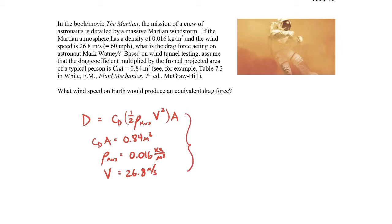If you plug these values into our expression for the drag, what you'll end up getting is that it comes out to be 4.8 Newtons, or just about 1.1 pounds force—a very small value acting on the person. You can see that they took a lot of artistic liberty in the movie and book, saying that this Martian windstorm was blowing people around and knocking things over. The forces are exceedingly small.